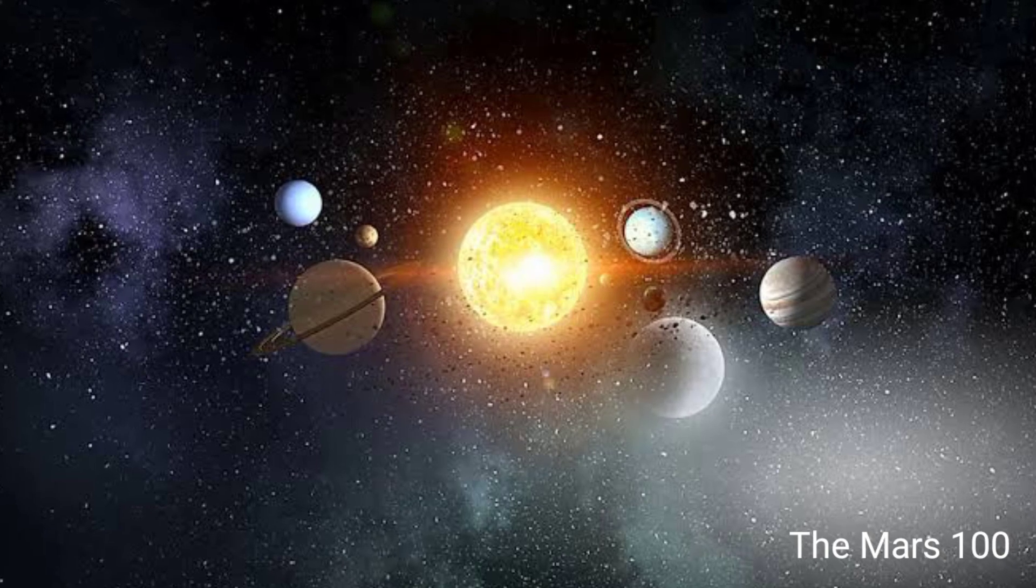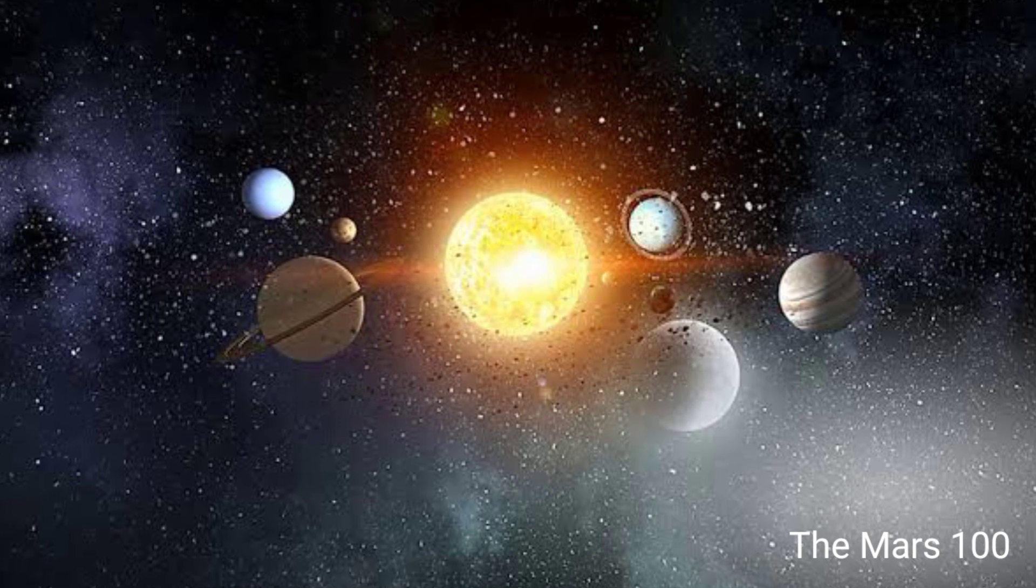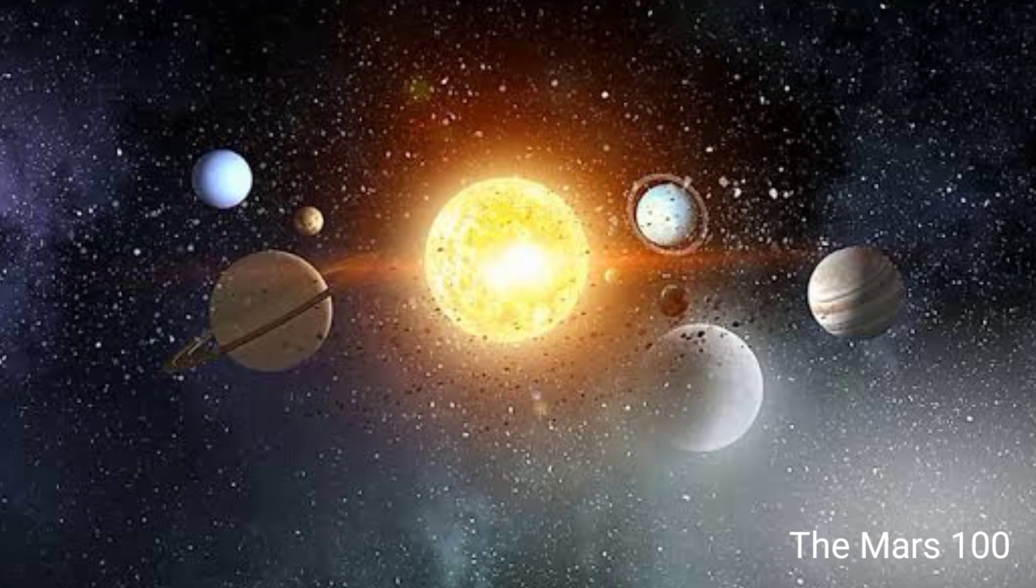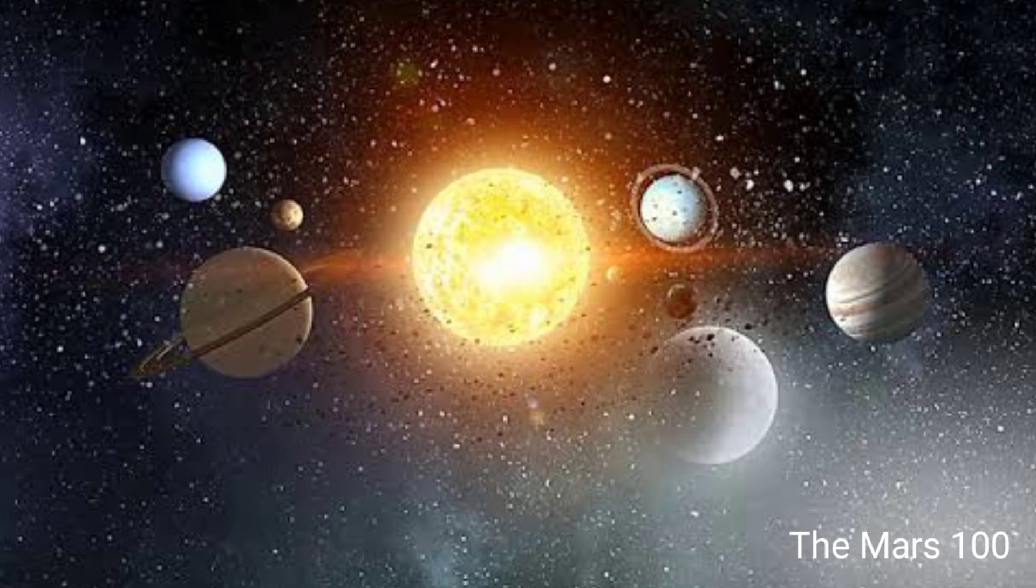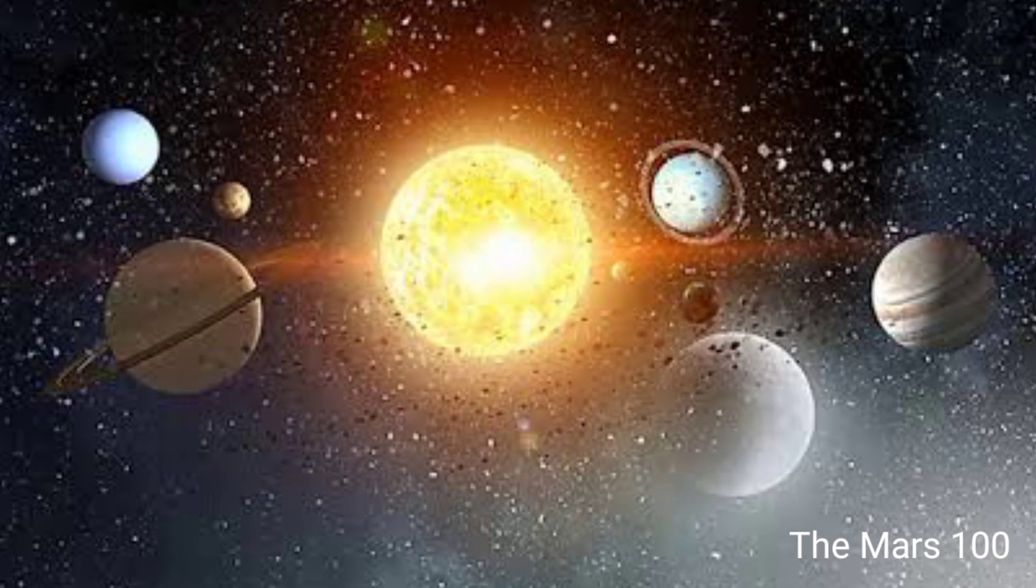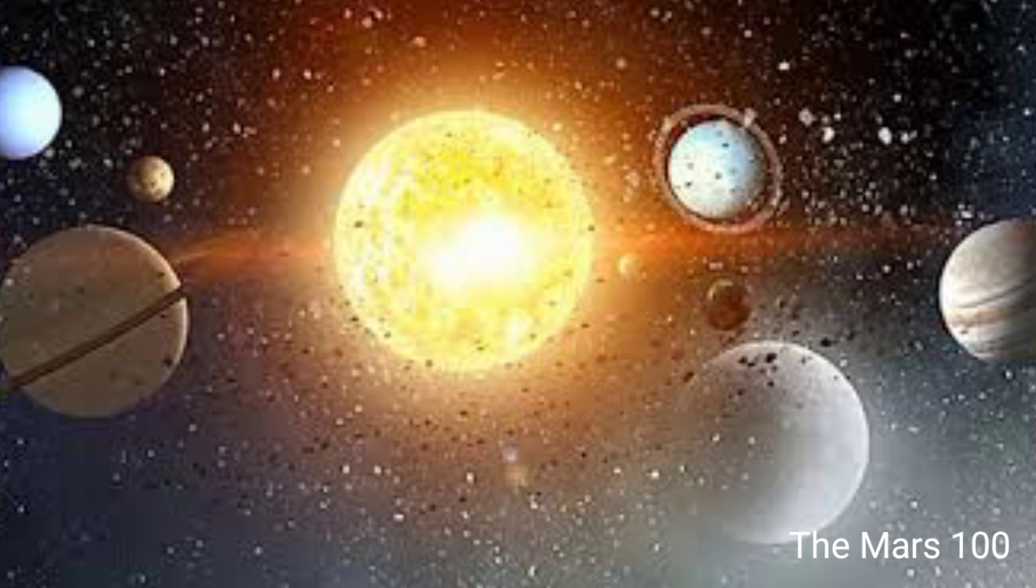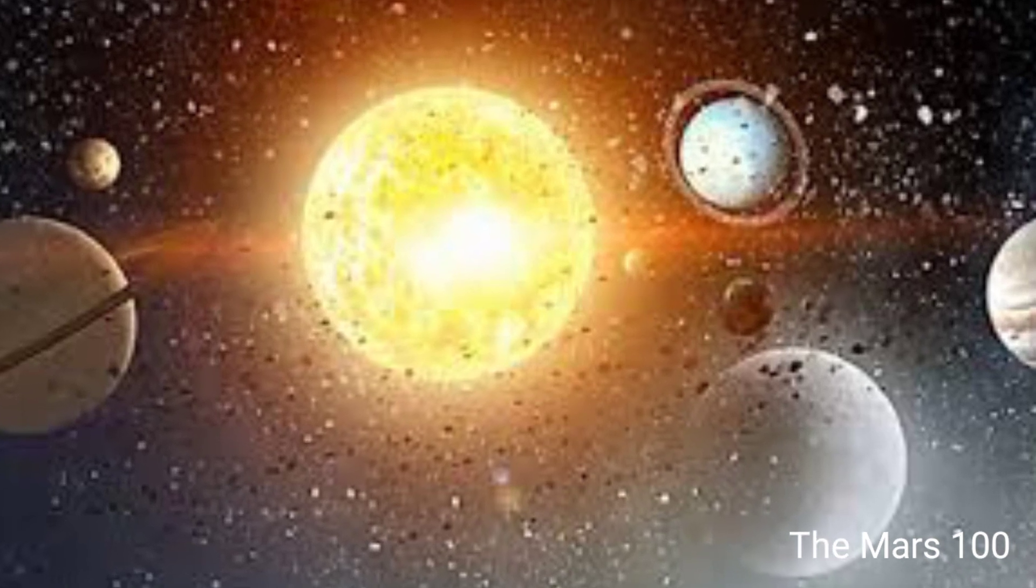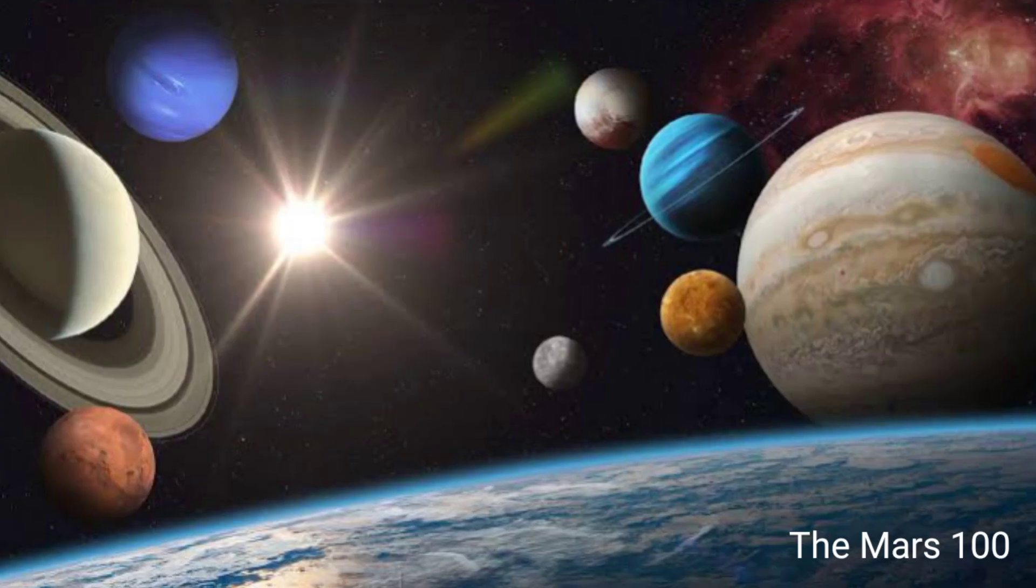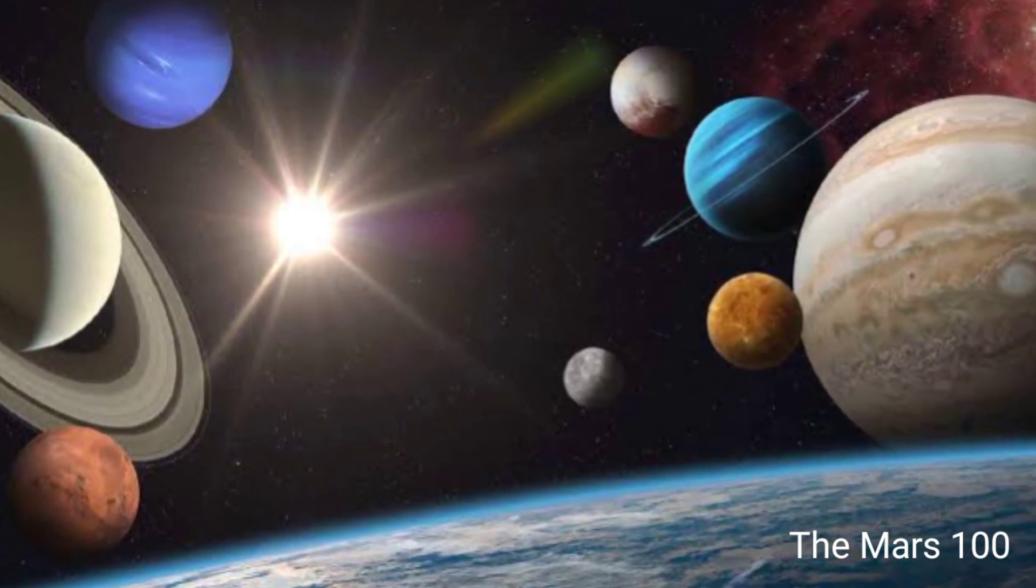In theory, the closest Mars and Earth would get is when Mars reaches its closest point to the Sun (perihelion) and Earth is at its furthest (aphelion). This would bring the two planets within 33.9 million miles (54.6 million kilometers) of each other. But this has not yet happened in recorded history.